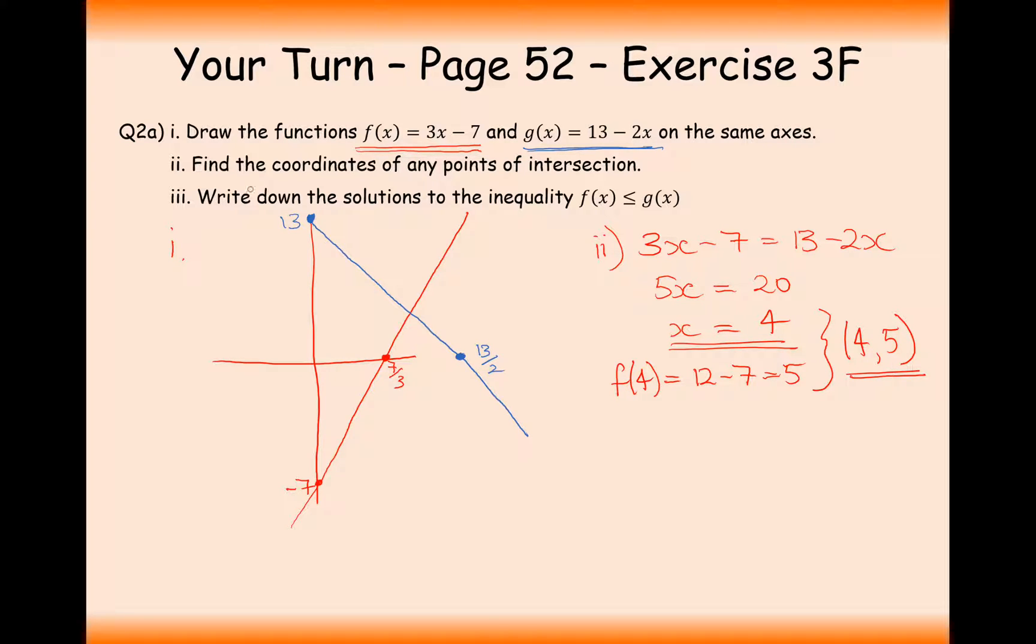The third part here is write down the solutions to the inequality of f(x) is less than or equal to g(x). What we're looking for here is for the red function, the f(x), to be less than the g(x) function, effectively underneath the blue function. At all of these points here, we see that the red graph is below the blue graph.